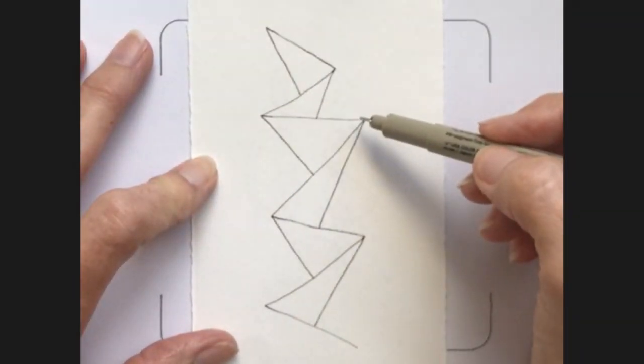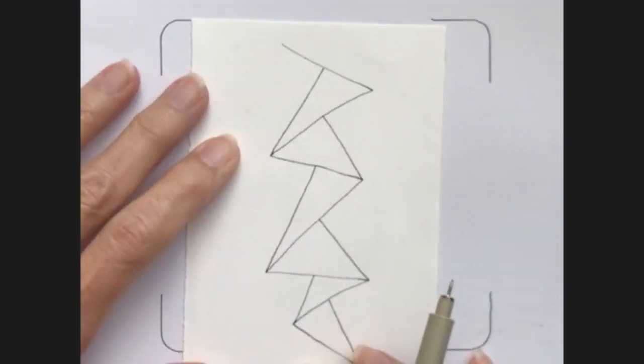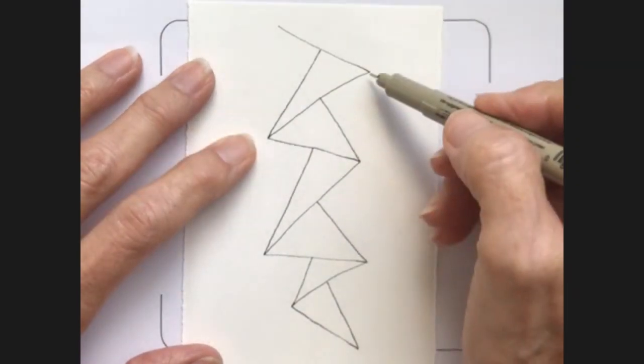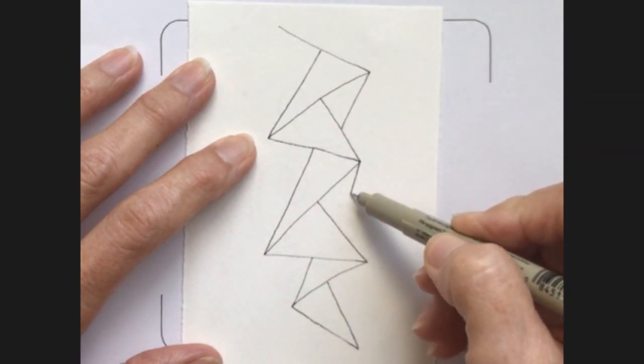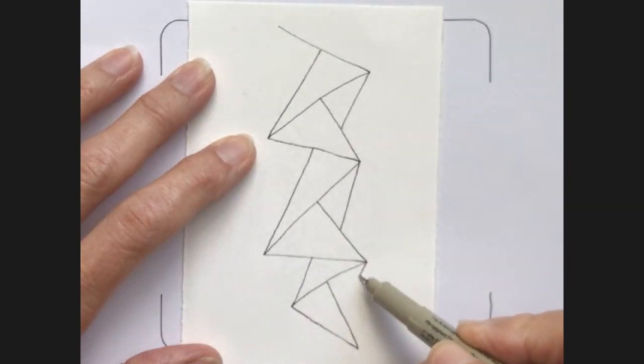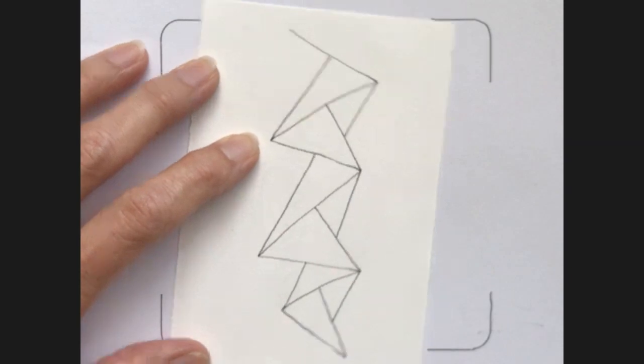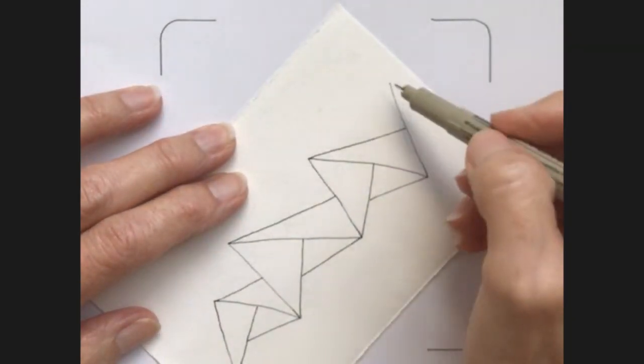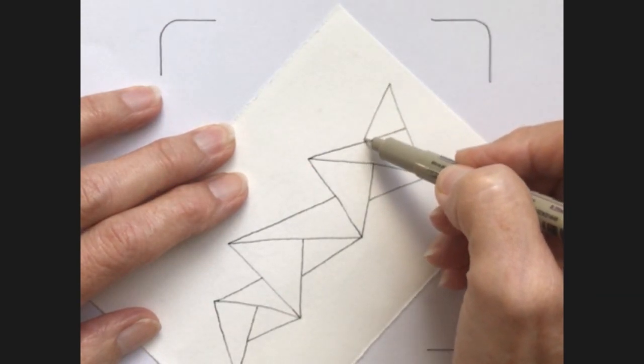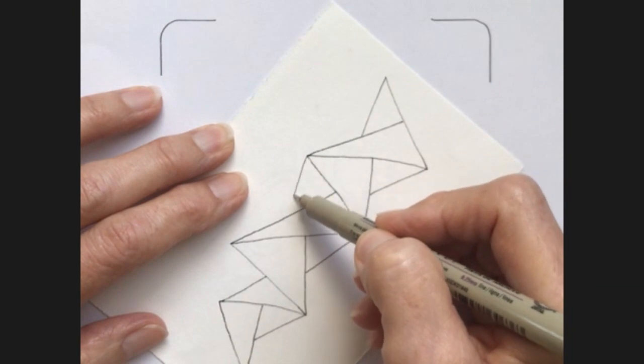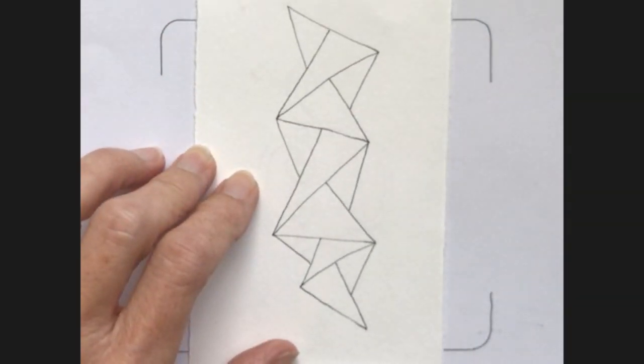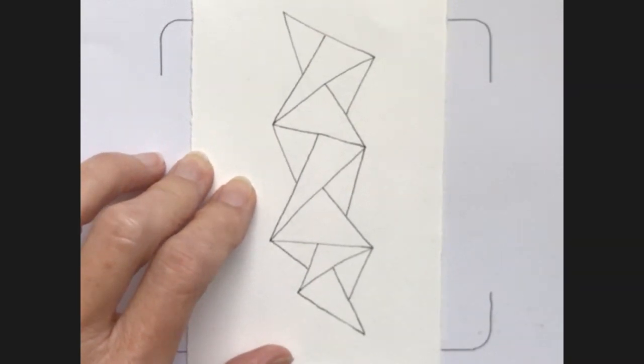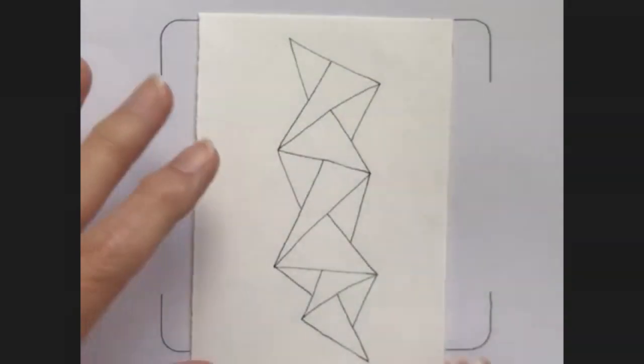So now that we've done each side like that, we're going to flip this over and do the same thing. I'm going to go from this corner, bring it down. This corner, down. This corner and down. Let's do it again. On this corner, this corner, and this corner.